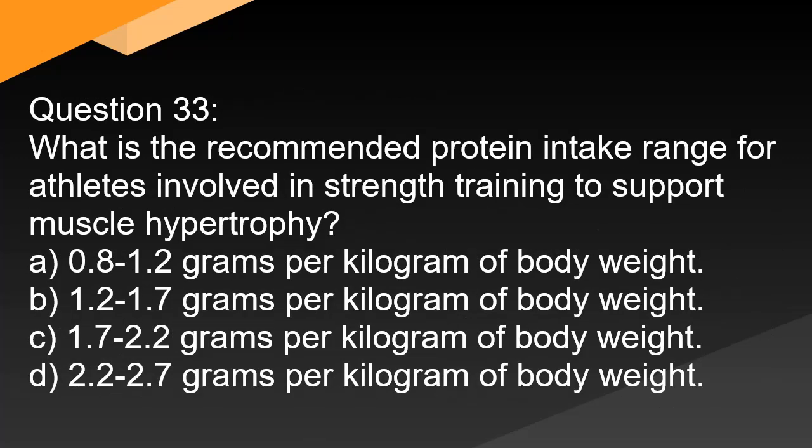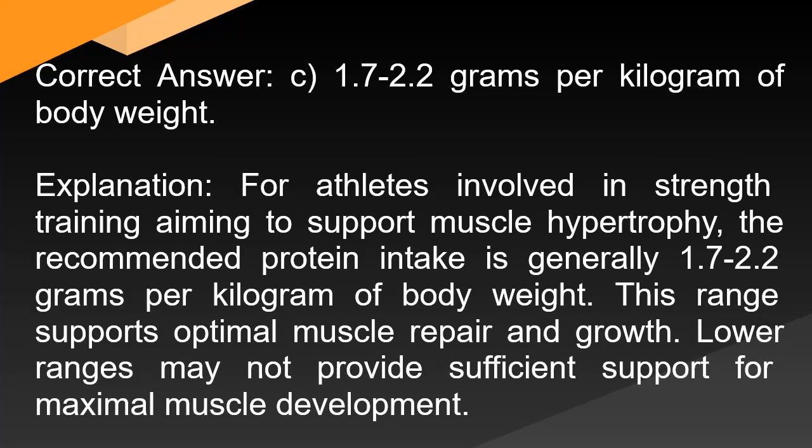Question 33: What is the recommended protein intake range for athletes involved in strength training to support muscle hypertrophy? A. 0.8–1.2 g/kg body weight. B. 1.2–1.7 g/kg body weight. C. 1.7–2.2 g/kg body weight. D. 2.2–2.7 g/kg body weight. Correct answer: C. 1.7–2.2 grams per kilogram of body weight. For athletes involved in strength training aiming to support muscle hypertrophy, the recommended protein intake is generally 1.7–2.2 g/kg of body weight. This range supports optimal muscle repair and growth. Lower ranges may not provide sufficient support for maximal muscle development.